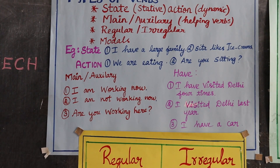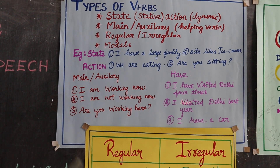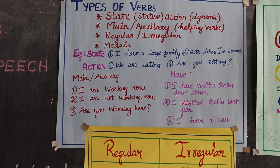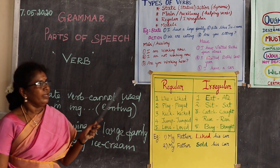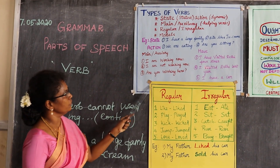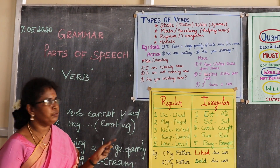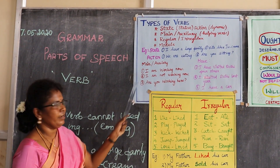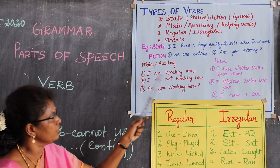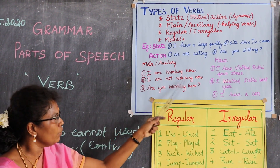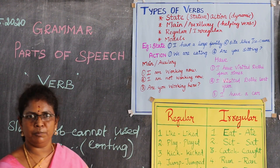To form a negative: 'I am not working now' — here 'not' makes it negative. To form a question: 'Are you working here?' All three sentences use B-verbs as helping verbs: am, is, are. For example: 'He is working now,' 'He is not working,' 'They are working,' 'They are not working.'